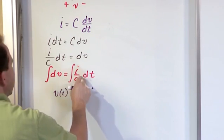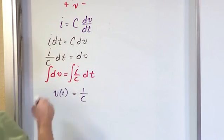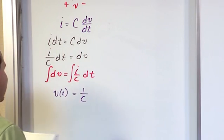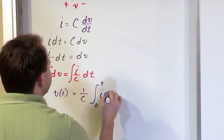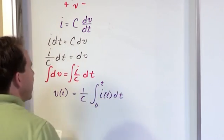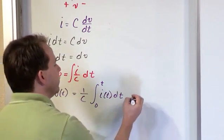And then over here, the one over C is a constant. So the one over C just comes out of the integral. And then I'm integrating i dt. So this will be the integral of zero up to time t of i dt. Now I'm doing this integral, but then you always have a constant of integration when it's over.